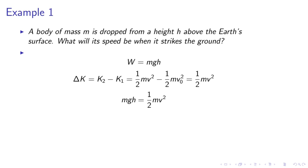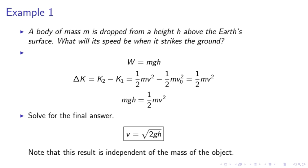I'm going to write work equals MGH. Delta K equals K2 minus K1 equals half MV squared minus half MV not squared equals to half MV squared. Where the V0 is equal to zero. MGH is equal to half MV squared. So we can simply obtain the velocity. We solve for the final answer V equals the square root of 2GH. Note that this result is independent of the mass of the object.